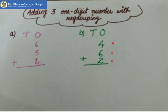10. 10 ho gaya. Now one more number is there: 2. Now we have to add that also.